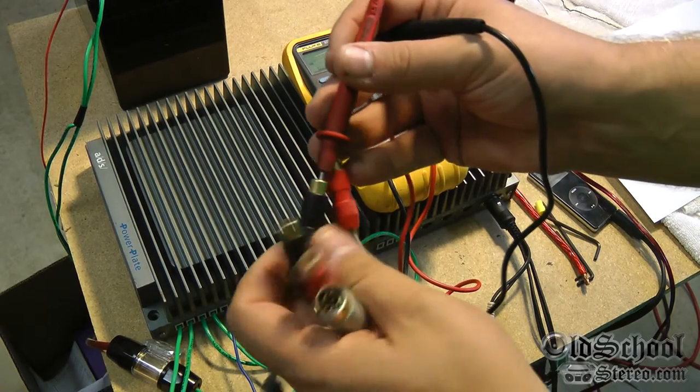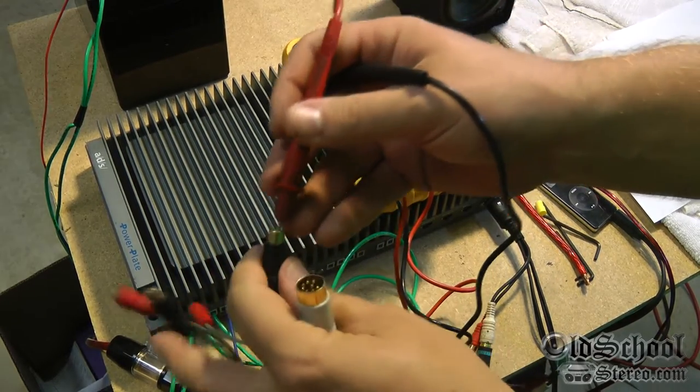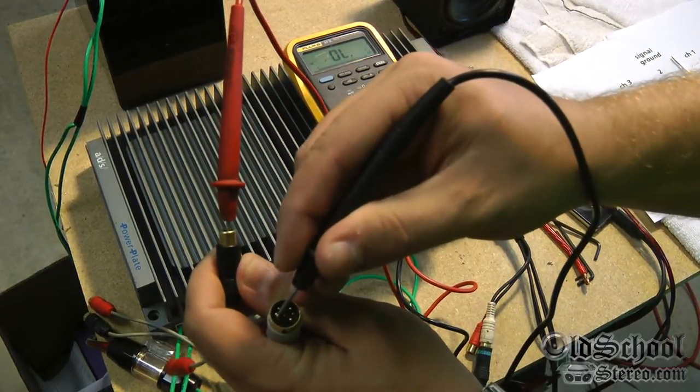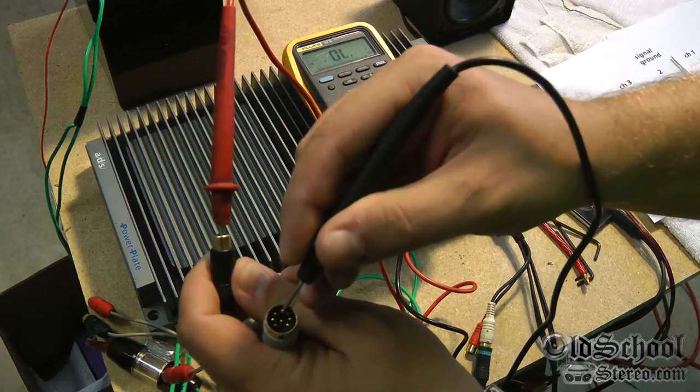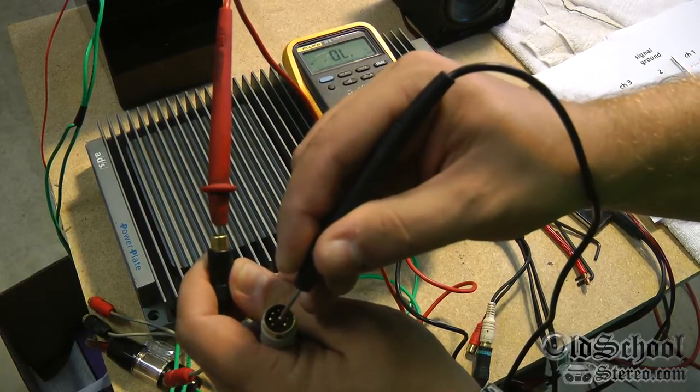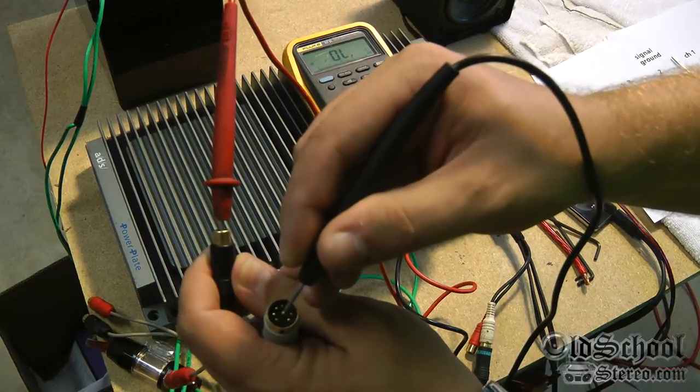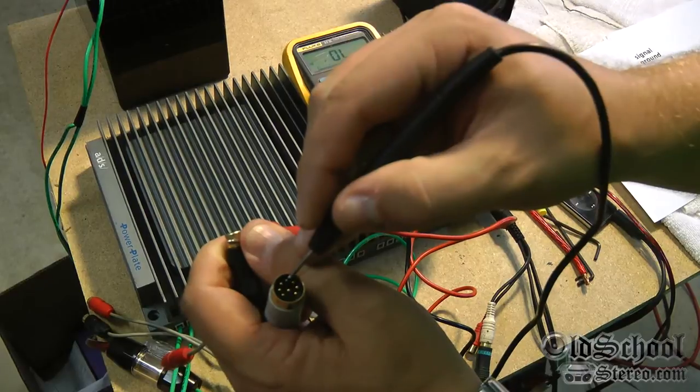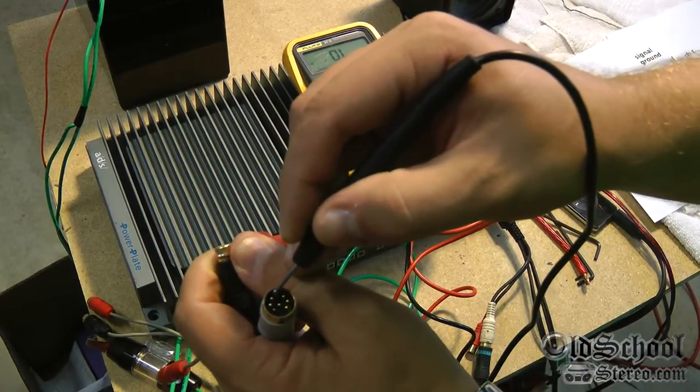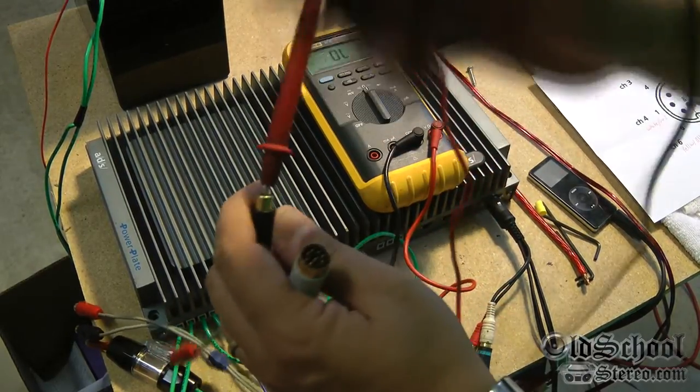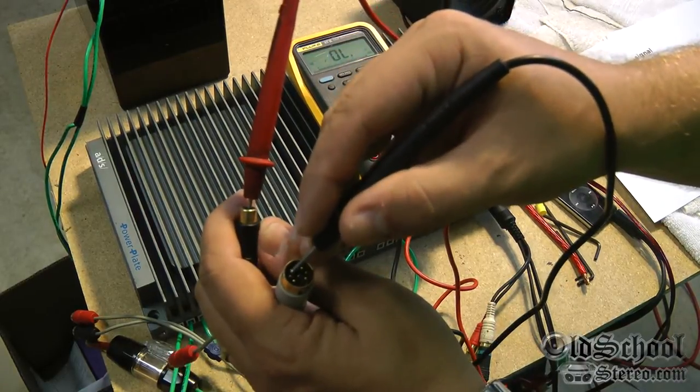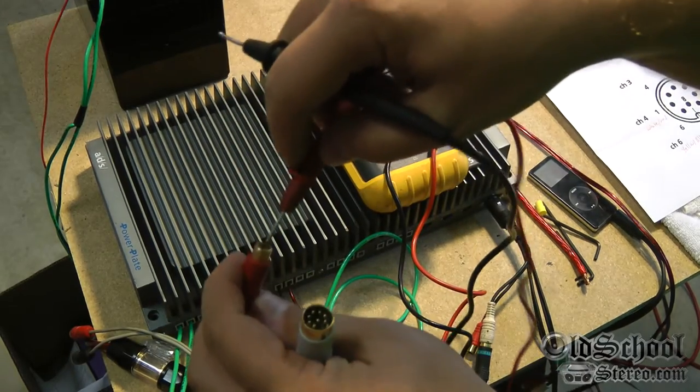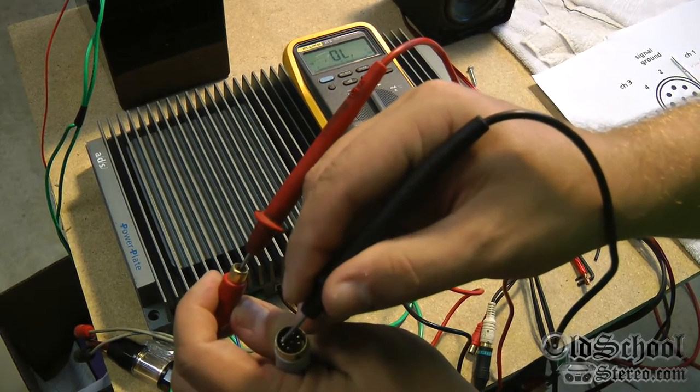Let's go to this one and test. We get nothing, so this is the one for channel one - it's not getting continuity. And we can verify we've got ground, so the ground is working. It's just the inner conductor is not - nothing there.